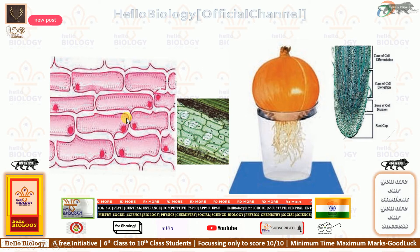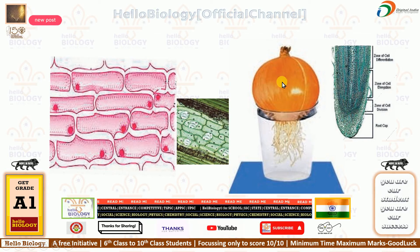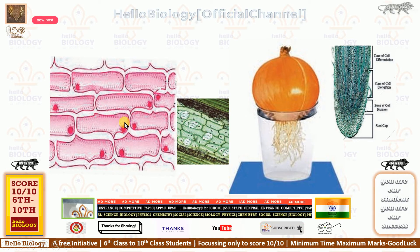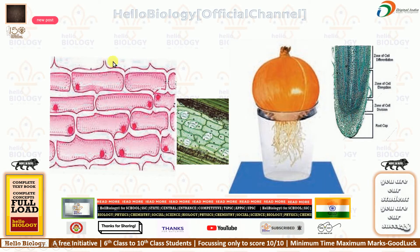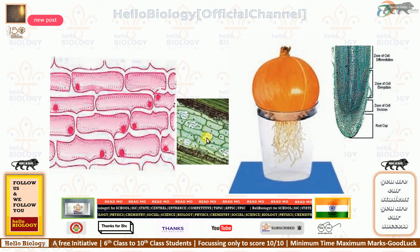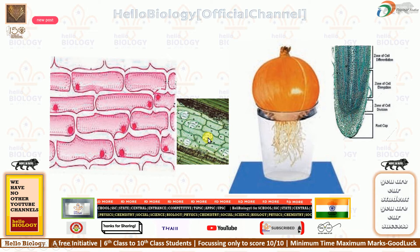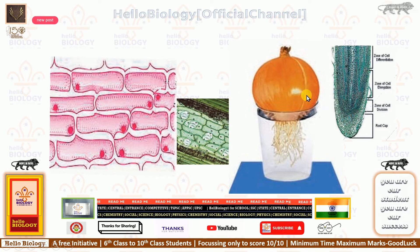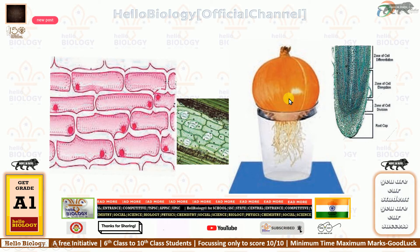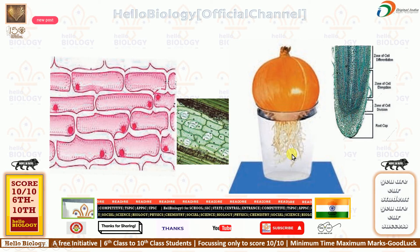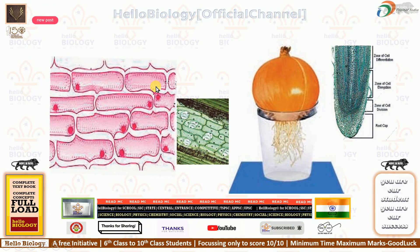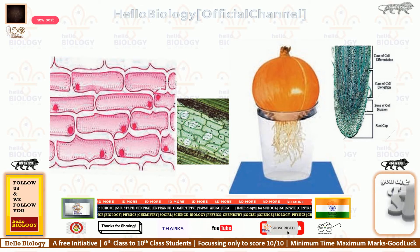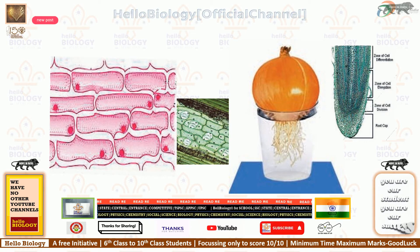Onion cell activity: as you performed in your lower classes, take an onion peel and put it under a microscope on a clean slide. Then you can see these kinds of tissues. Tissues are divided into four types: meristematic tissue, dermal tissue, vascular tissue, and ground tissue.